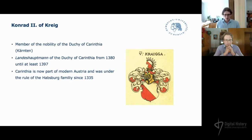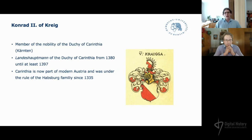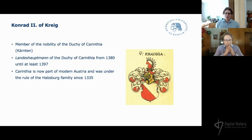We know that Conrad of Kraig belonged to one of the most important noble families in the Duchy of Carinthia, which is Kärnten today, where he himself also held noble offices. The family of Kraig had their Stammsitz located in the Duchy of Carinthia, which may be regarded as the supposed center of power and main residence. We also know the Duchy of Carinthia actually belonged to Habsburg-controlled Austria at the time.